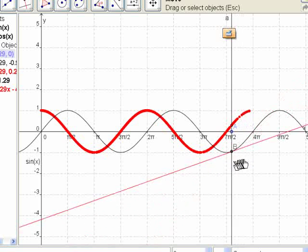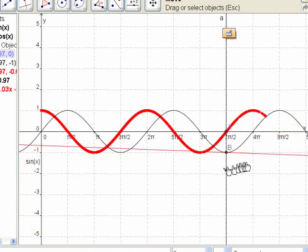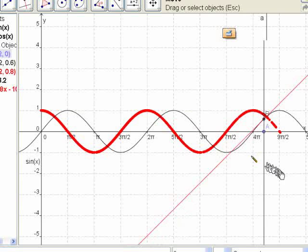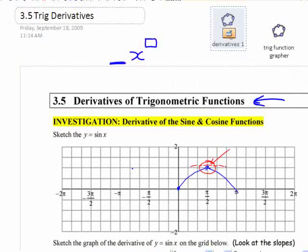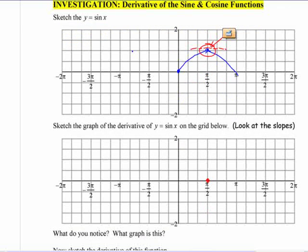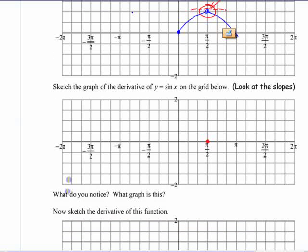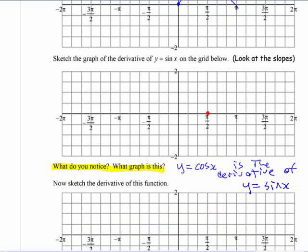What is that the graph of? That is the graph of cosine of x. Graph of cosine of x. Well, let's not get ahead of ourselves. Hopefully what you noticed is this graph is a graph of y equals cosine of x. Y equals cosine of x is the derivative of y equals sine of x. Cos x is the derivative of sine of x.